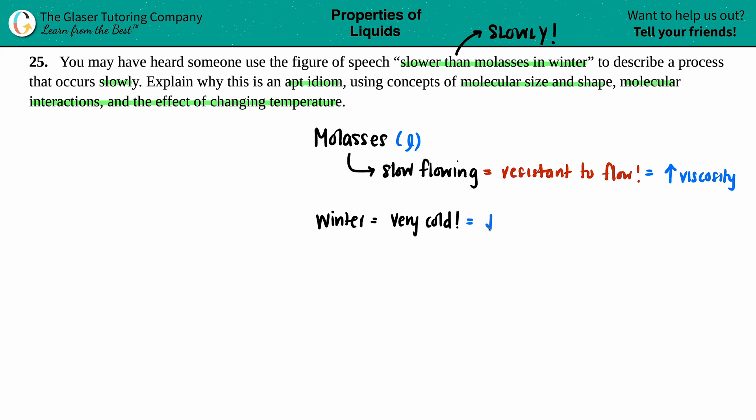Now if something is very cold, that means that your temperature is dropping. And if your temperature is dropping, if you have a low temperature, this means that your kinetic energy of the material in terms of molasses is decreasing.